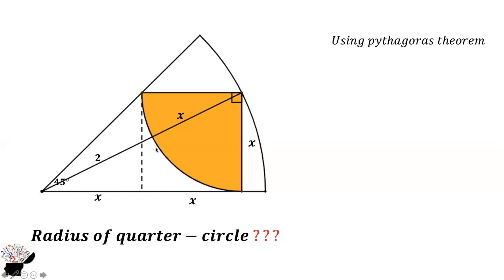From here we can see that this side is 2x, so (2x)² plus x² equals the hypotenuse (2+x)². So we get (2x)² = 4x² plus x², which gives us 5x² equal to (2+x)².